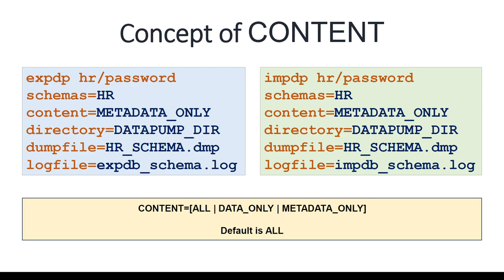The CONTENT parameter controls what is exported or imported. Options are: ALL (default — data plus metadata/structure), DATA_ONLY (only data, no DDL), and METADATA_ONLY (only the structure/DDL, no data). Using CONTENT=METADATA_ONLY will create tables without any data, useful when you want to replicate schema structure to another database.